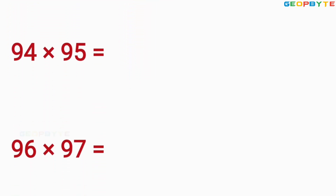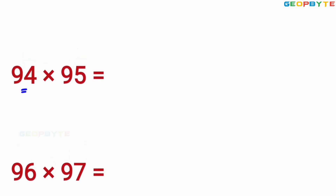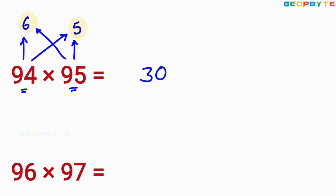Similarly, let us take 2 more multiplications for less than 100. First, you take 94 into 95. Here, 95 is less than 100 by 5. 94 is also less than 100 by 6. You multiply 6 and 5. What is 6 into 5? 30. Write that 30 here. Then you write 94 minus 5 or 95 minus 6. 94 minus 5 is 89, or 95 minus 6 also gives 89. Therefore, 8930 is the value of 94 into 95.